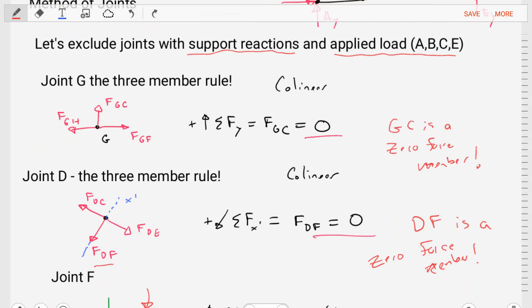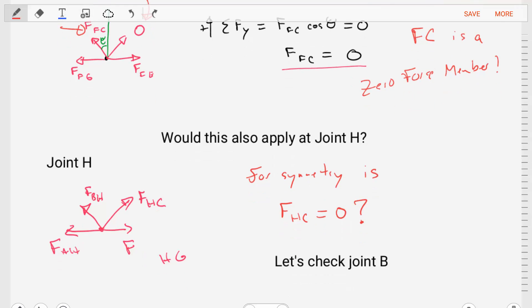So let's, with that in mind, look at joint H and then see what happens. So at joint H, we would have four members that we don't have any information about. So there's four unknowns, that's too many unknowns for us to solve joint H. And for symmetry, we would think that FHC would be equal to zero. But before we do that, let's check joint B.